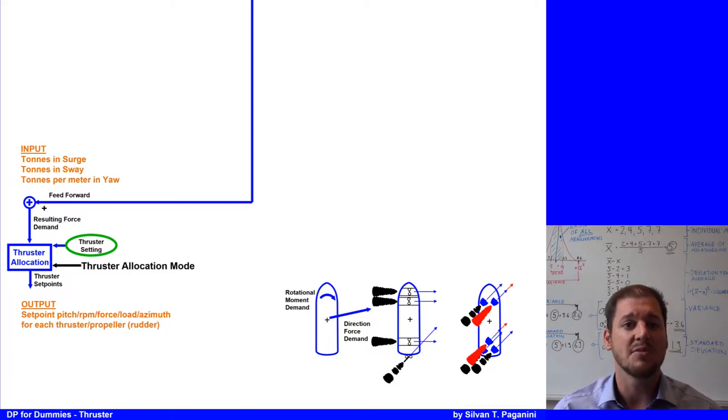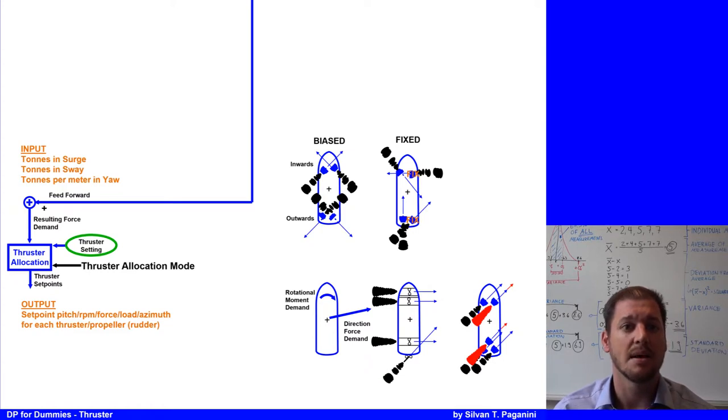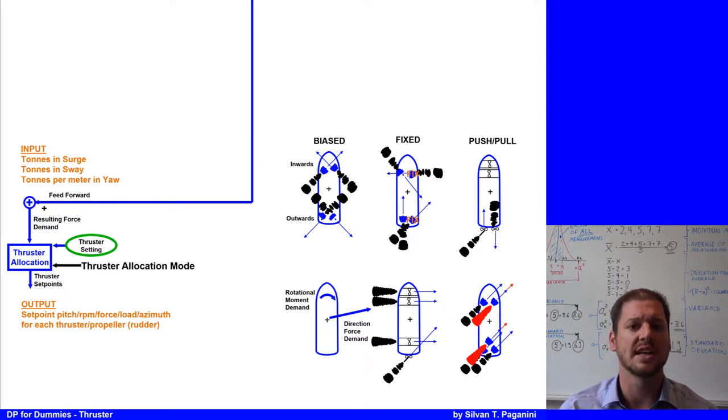To avoid the situation, the DPO can use different thruster modes, like bias, where thrusters are placed opposite to each other and some thrust is applied against each other. This can be inwards or outwards. Then the fixed mode can be used to set thruster on a fixed angle. The push-pull mode can be used if the vessel has two propellers and rudders. In push-pull mode, one propeller only runs ahead and the other is allowed to run astern. The rudder behind the ahead propeller is used to create side force.